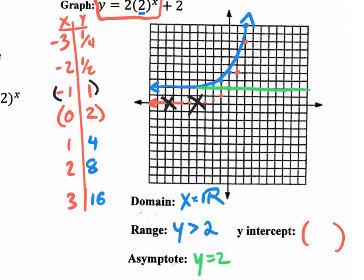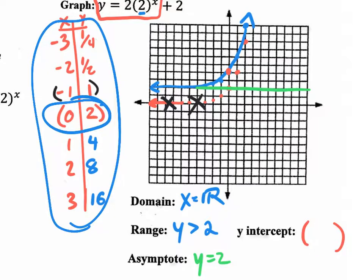If they ask you for the y-intercept, that's simply the coordinate of where your graph crosses the y-axis — that would be this point right here. Here's the origin, (0, 0). So what is that point? Zero, one, two, three, four — it's (0, 4). Be careful not to use the parent graph coordinates since those aren't the coordinates of your actual graph. The coordinates of your actual graph are after you shifted them two up. The y-intercept of the blue graph would be (0, 4).